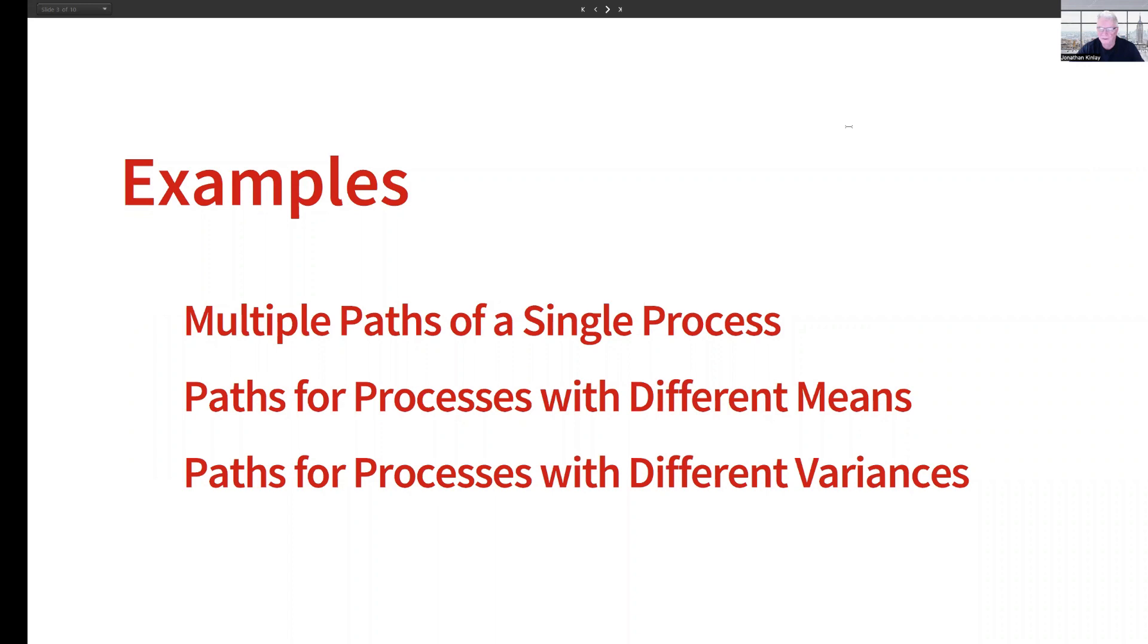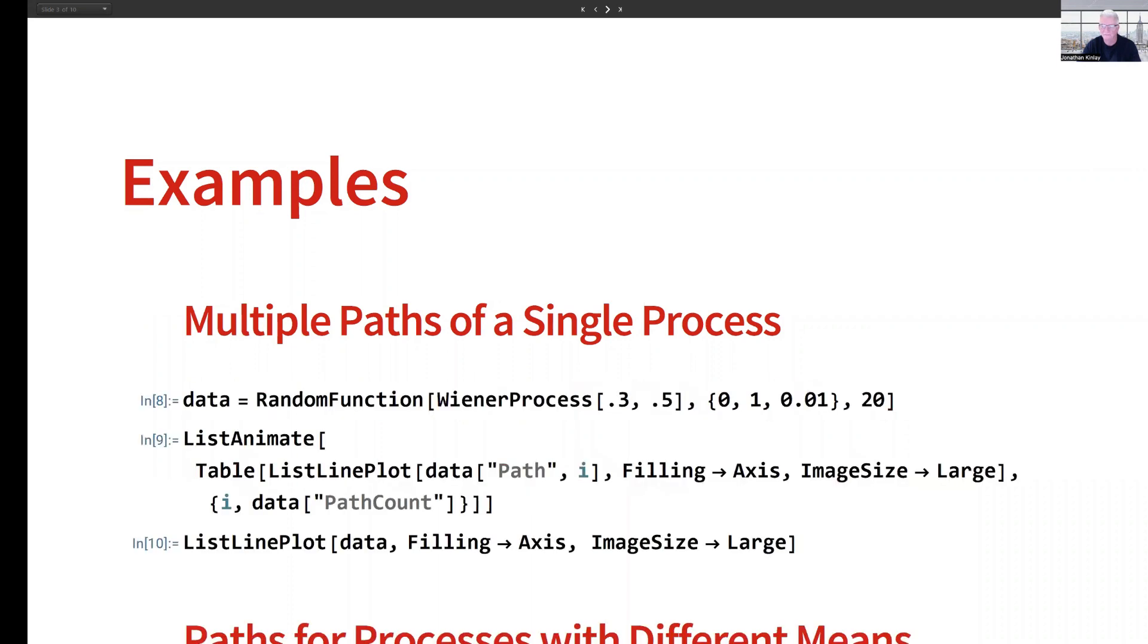Now I want to look at some examples of various different types of Wiener process, beginning with multiple sample paths from a single process. The process I've chosen is a Wiener process with parameters 0.3 and 0.5, so a mean of 0.3 and a standard deviation of 0.5. We're going to look at that process as it evolves over time from 0 to 1, and we'll take 20 sample paths from that process.